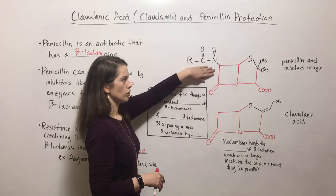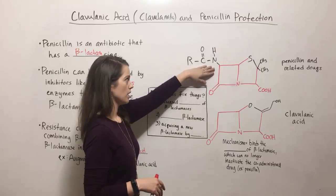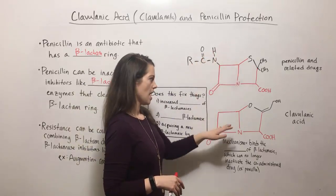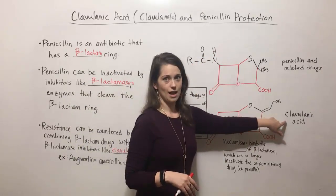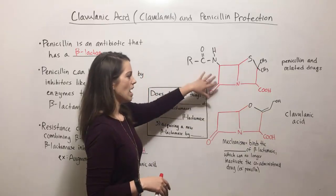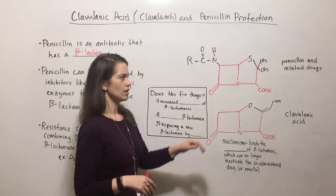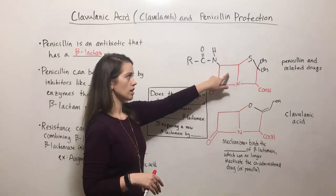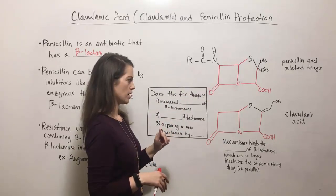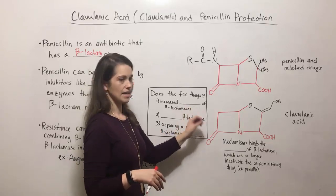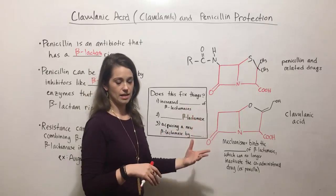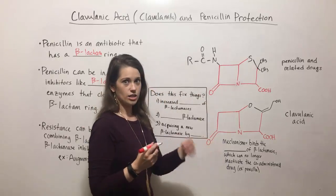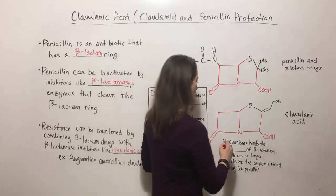Here I've drawn the structure of penicillin and related drugs. They've got slightly different R groups, but are otherwise quite similar. And here is the structure of clavulanic acid. In red, I've noted the similarities, and you can see how much clavulanic acid looks like penicillin and related drugs. The mechanism through which it interferes with beta-lactamases is that it actually binds to the active site of beta-lactamases.